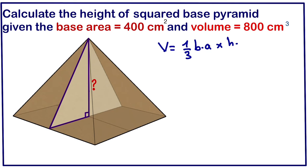We know that the formula of volume of a pyramid is one third the base area times the height. So next thing to do is to plug in the known value. The volume is 800 should be equals to one third. The base area is 400 times the height.